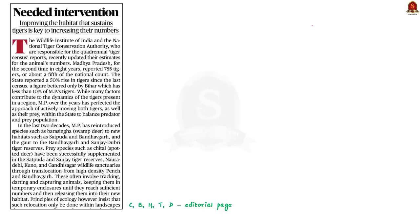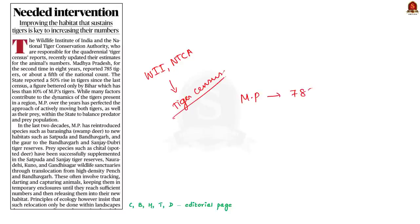Let us move on to our next topic. Recently, the Wildlife Institute of India and National Tiger Conservation Authority conducted the tiger census. According to this updated census, Madhya Pradesh is reported to have 785 tigers, which is about one-fifth of the total tigers in the country. This is a 50% increase since the last census. The editorial highlights the steps taken by Madhya Pradesh government to improve the tiger numbers.